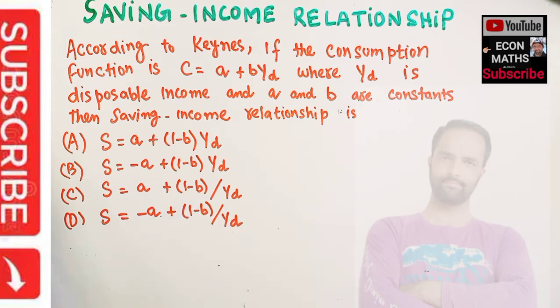Simple thing. We know that our aggregate demand or aggregate supply should be equal to our consumption demand plus savings demand. This is our identity here. Now,